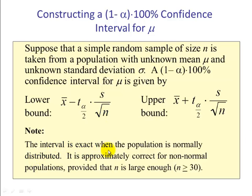Note, the interval is exact when the population is normally distributed. It is approximately correct for non-normal populations provided n is large enough, and our rule of thumb is 30 or more.